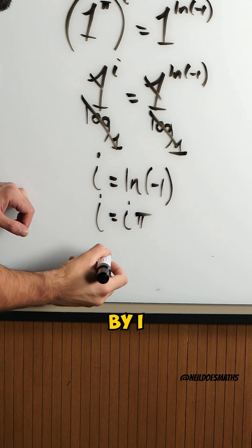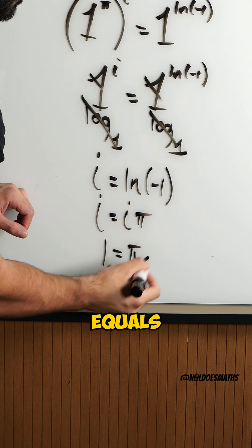Dividing both sides by i, I get 1 equals pi.